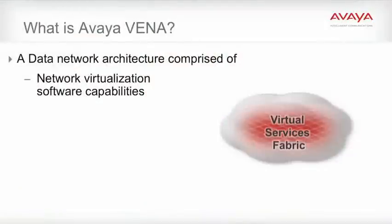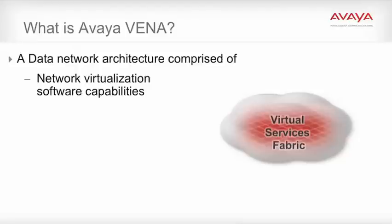So what is Avaya Vena? Avaya Vena is an architecture that is comprised of four major elements. First, network virtualization software capabilities in the form of IEEE shortest path bridging that enables the virtual services fabric. Second, next generation Ethernet switching hardware, the Avaya Virtual Services Platform 9000, our next generation core and data center switch.